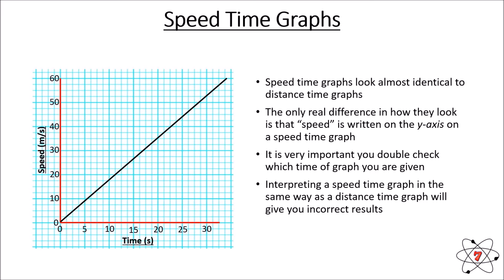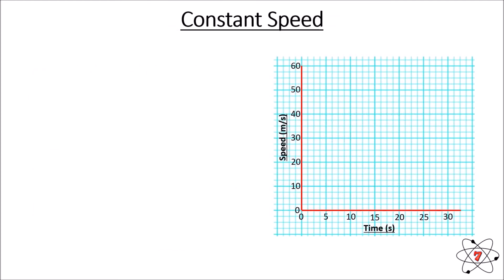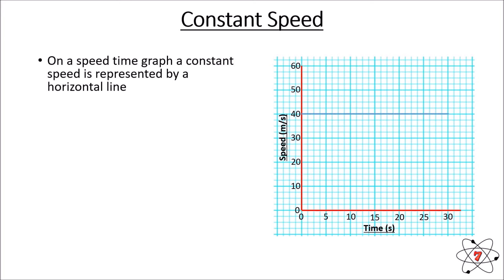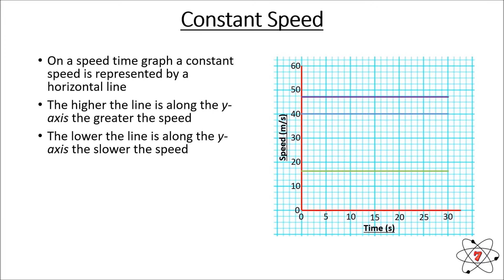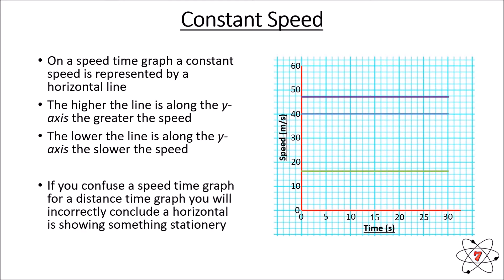On a speed-time graph, constant speed is represented by a horizontal line. Here we can see constant speed of 40 metres per second — because the speed is not going up or down, the line is horizontal. The higher the line is along the y-axis, the greater the speed; the lower the line, the lower the speed. If you confuse the speed-time graph for a distance-time graph, you'd incorrectly conclude that a horizontal line is showing something that is stationary. This is why it's so important to double check the type of graph you have.